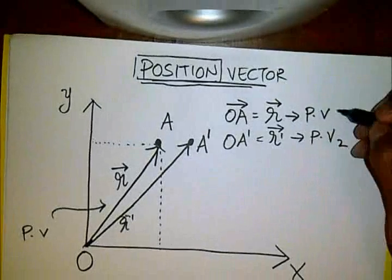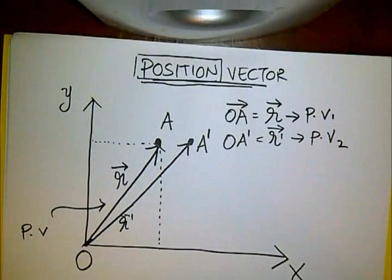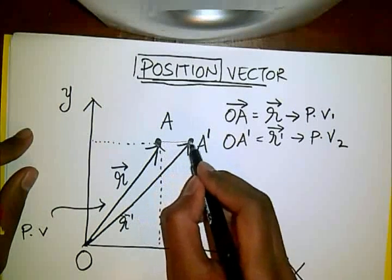So this is our initial position was A, then it moved to A dash. So we can define something different now. We can define something called as a displacement vector. That is, this.